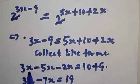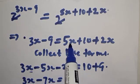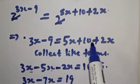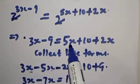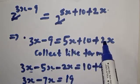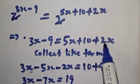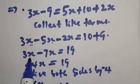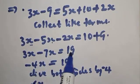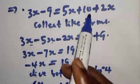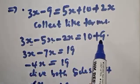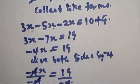Then since we have the same base, the bases cancel and we have 3x minus 9 equal to 5x plus 10 plus 2x. Collecting like terms: 3x minus 5x minus 2x — that is 5 plus 2 gives 7 — so 3x minus 7x equals 10 plus 9, which is 19.